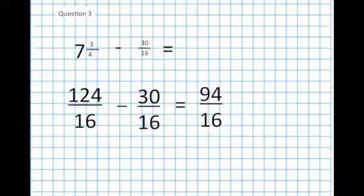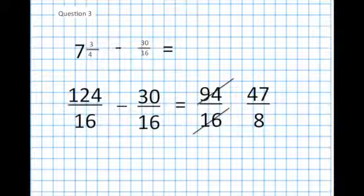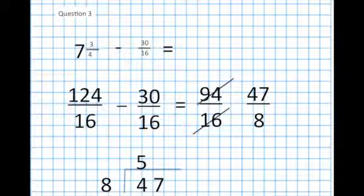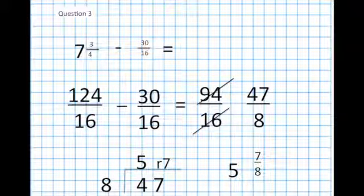Which is an improper fraction. Before I try and turn it into a proper fraction, a mixed number, I'm going to simplify it. 94 and 16 are both even, so they will divide by 2. Which gives me 47 eighths. Which is a much easier number to turn back into a mixed number. Because I can divide easily by 8. How many eighths in 47? Well, 5 eighths are 40 and the remainder is 7. And because we're dealing in eighths, the remainder is 7 eighths.